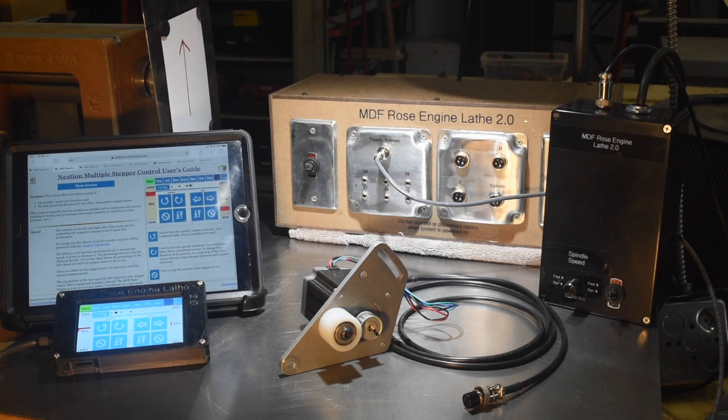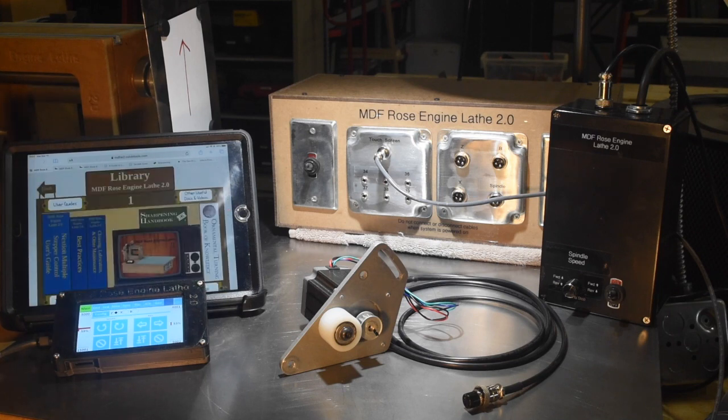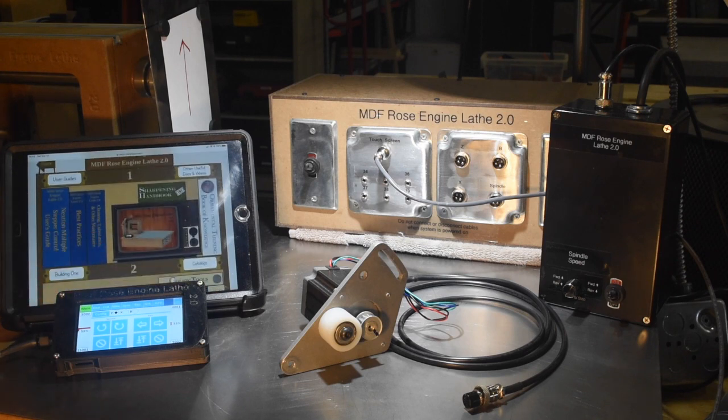But I can tell you, this system's a lot more complicated to build, and it's more expensive too. So you can get all the information about this system. It's actually out here on the MDF Rose Engine Lathe 2.0 library, and it's organized like an actual library of books. The first shelf has manuals on how to use and maintain the machine. Also, the YouTube videos are there on that old school TV, which is kind of cool in my mind.